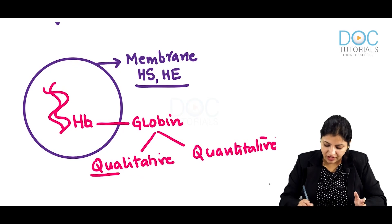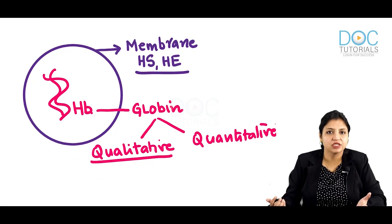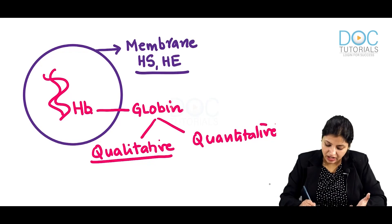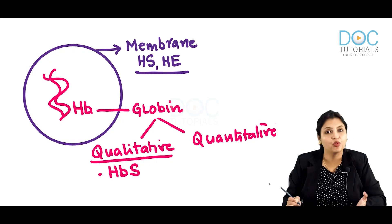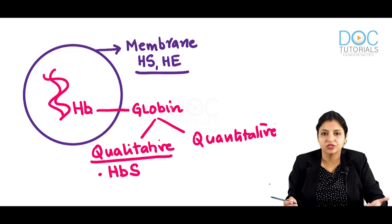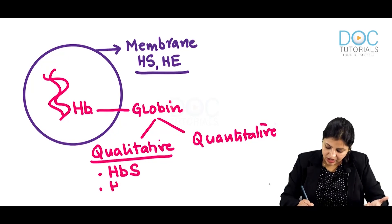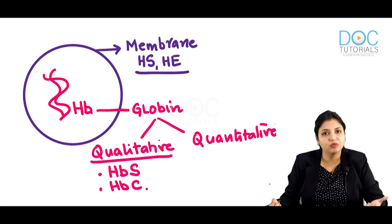A qualitative defect usually occurs due to point mutation — some quality of the globin is changed. For example, HbS is a missense point mutation in which glutamic acid is replaced by valine. Similarly, hemoglobin C is a point mutation in which glutamic acid is replaced by lysine.